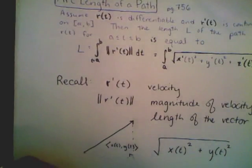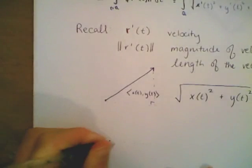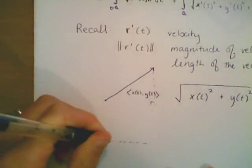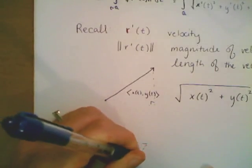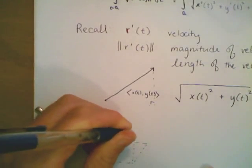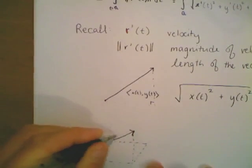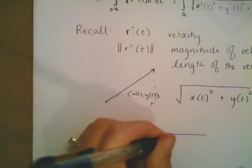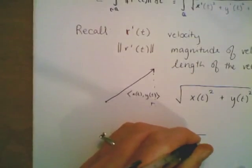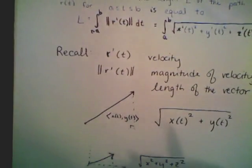If we have a three-dimensional vector, in addition to having an x component and a y component, it also has a z component. So if I have a point in three-space as the tip of my vector with the origin at the base, the length of this vector is the square root of x squared plus y squared plus z squared.